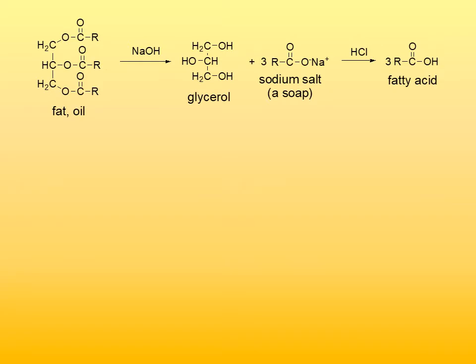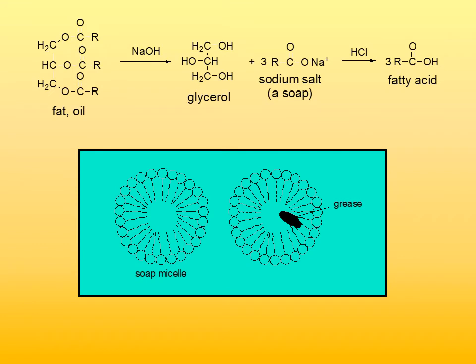The anion of the fatty acid contains a polar carboxyl group and a long non-polar hydrocarbon tail. Salts of the fatty acids, or soaps, form micelles in aqueous solution. Polar carboxyl groups orient themselves towards the outside towards water molecules, while non-polar chains are oriented inward. Polar carboxyl groups interact with water through hydrogen bonding, while non-polar chains interact with each other through London interactions. This allows soaps to solubilize non-polar substances such as grease by trapping them inside the micelle — that is how soaps act as cleaners.